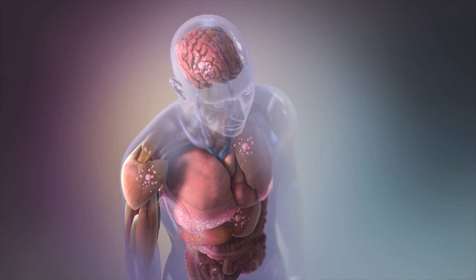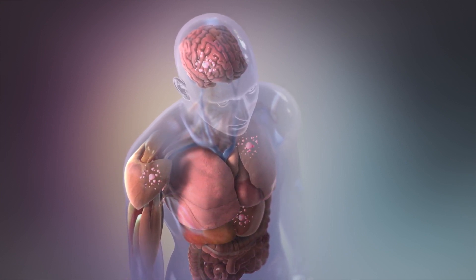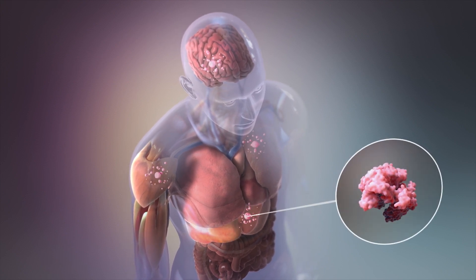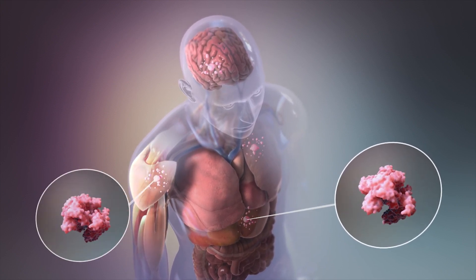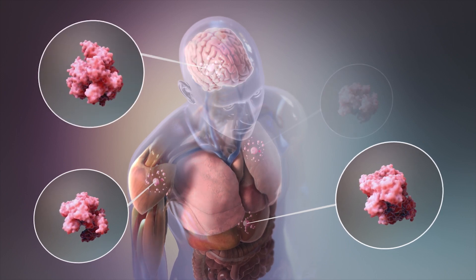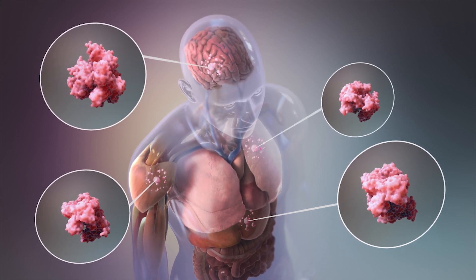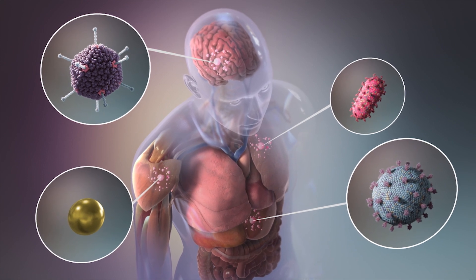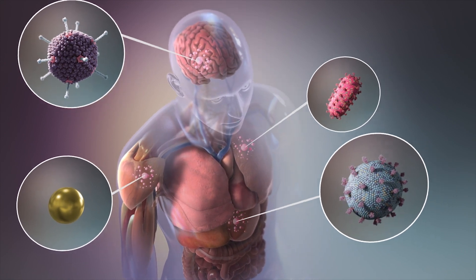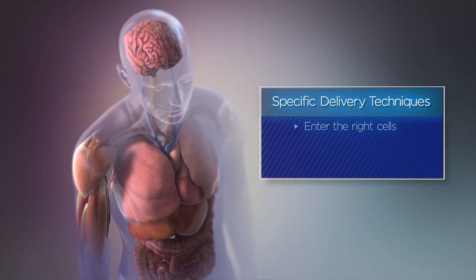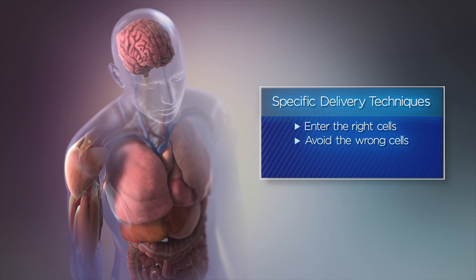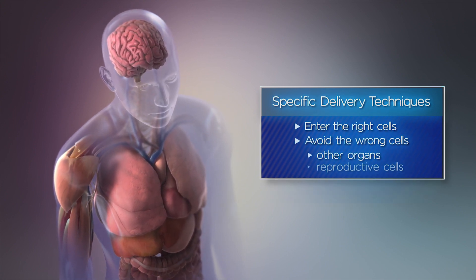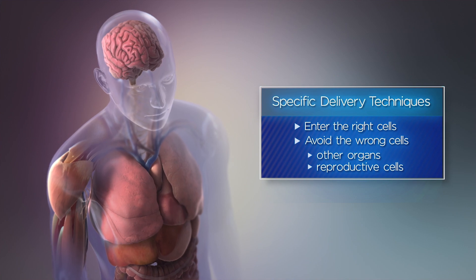For example, the DNA in millions of cells needs to be corrected to treat many diseases, and getting the editing tool into different types of cells, such as those of different organs, will require tailored delivery techniques and packages. The delivery techniques must be specific to enter the right cells and avoid the wrong ones, such as the cells of other organs or reproductive cells like eggs and sperm.